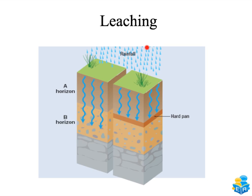If this heavy rainfall continues, a hard pan can develop. The hard pan forms at the boundary between the A and B horizons, where all the nutrients washed down from the A horizon come together and are cemented into an impermeable crust. This prevents water from infiltrating down into the soil, causing the A horizon to become waterlogged and any crops growing there to die.